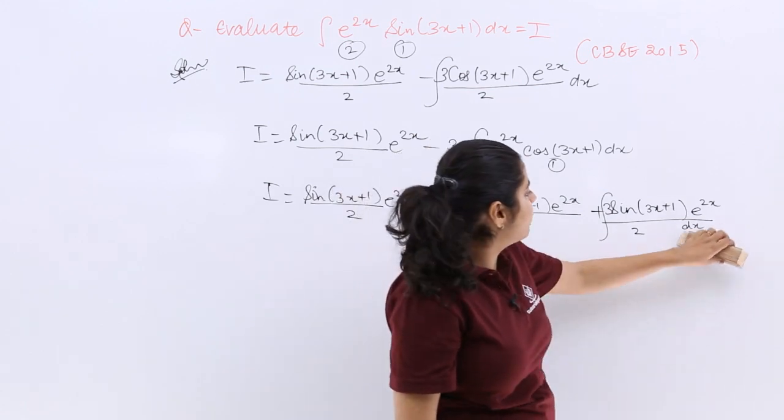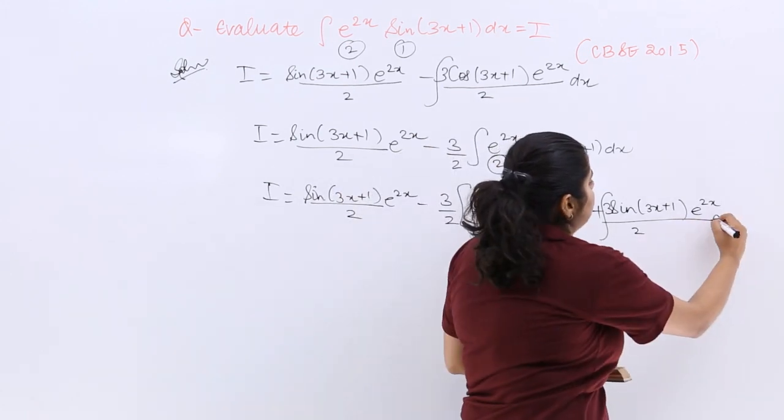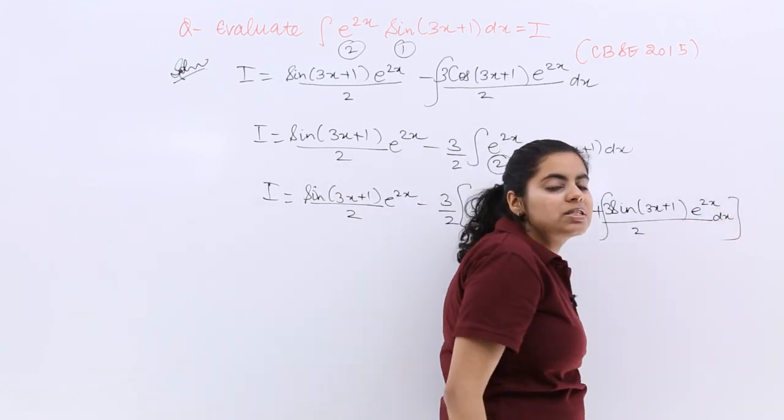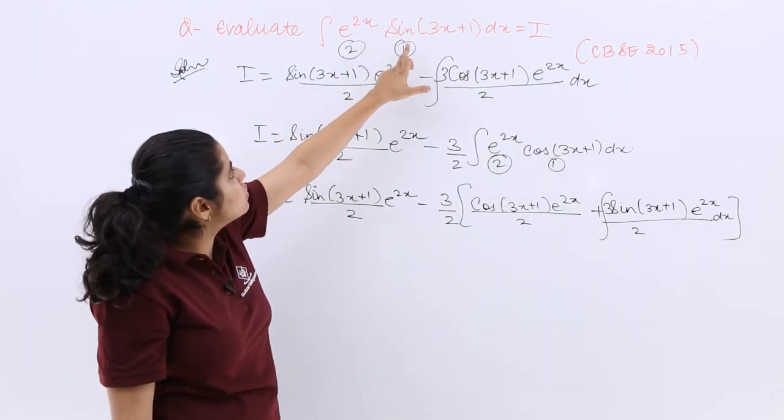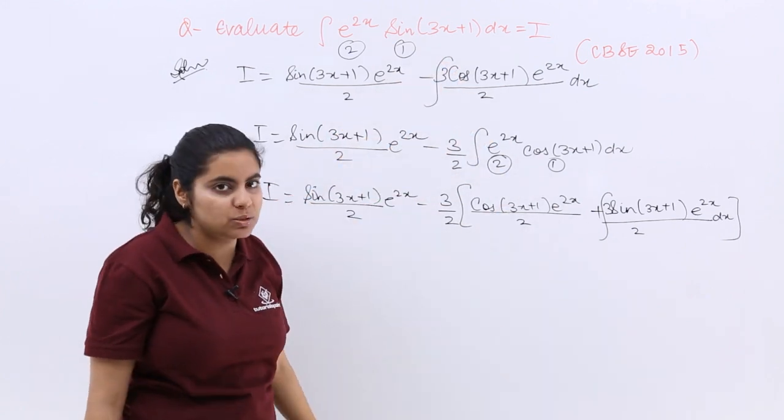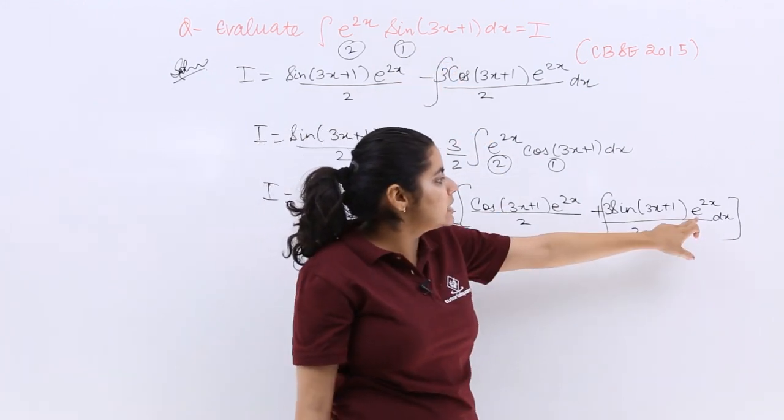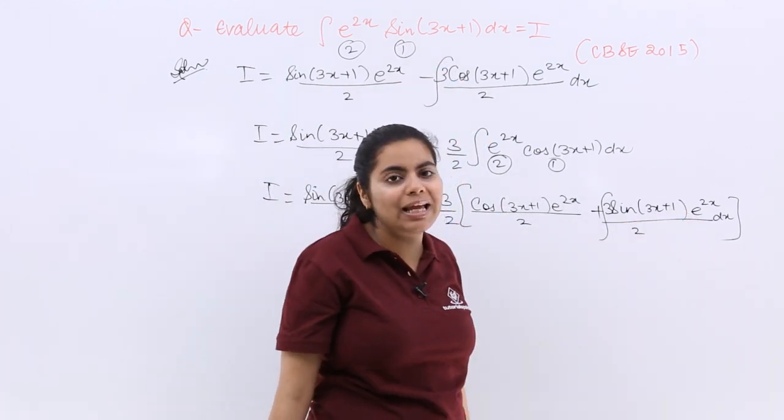dx should not come in the denominator, it was due to lack of space. Now see whether certain things are beneficial. As you can see my question was e raised to the power 2x sin(3x+1), and here also it is e raised to the power 2x sin(3x+1).